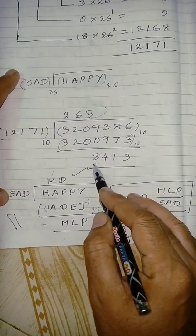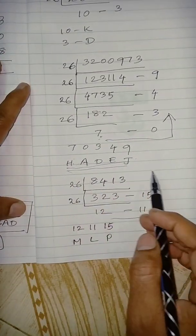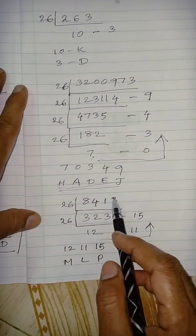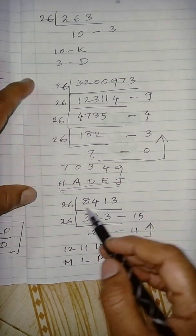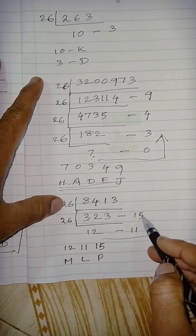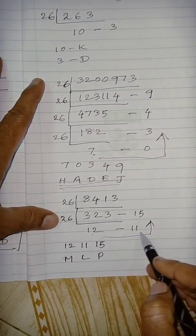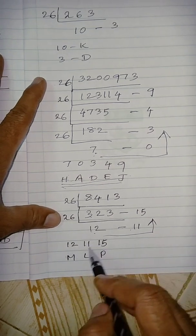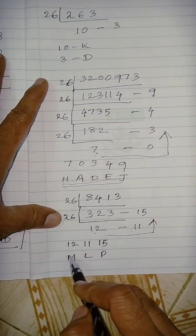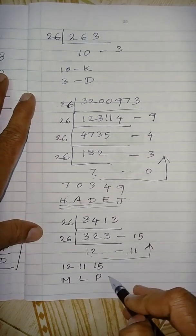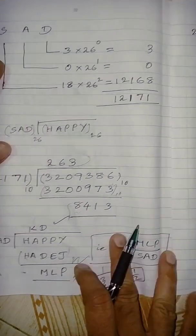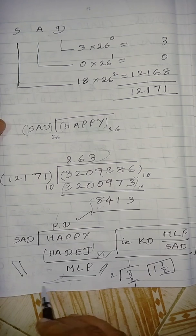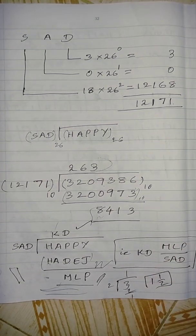So final remainder is 8,413. Converting 8,413 to base 26: divide by 26 — remainder 15; again divide by 26 — remainder 11; finally 12. In order: 12, 11, 15, corresponding to M, L, P — that is MLP. So this is our final answer. Thank you very much for watching the full video. Thank you for your support. Nandri.